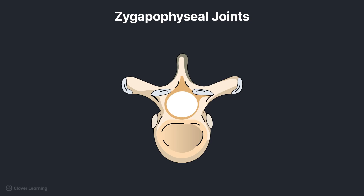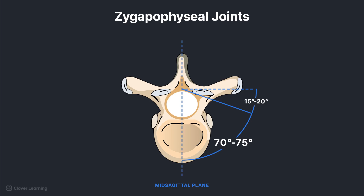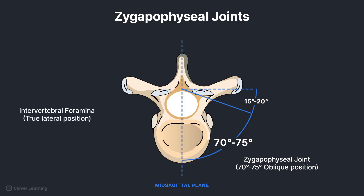The structure and angles of the zygapophyseal joints in the thoracic spine differ greatly from other regions. In the thoracic spine, the zygapophyseal joints form an angle of 70 to 75 degrees from the midsagittal plane. To demonstrate these joints radiographically, the patient must be in a 70 to 75 degree oblique position. The openings of the intervertebral foramina of the thoracic vertebrae are located at right angles to the midsagittal plane, so to demonstrate these clearly, the patient must be in a true lateral position.